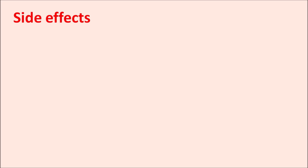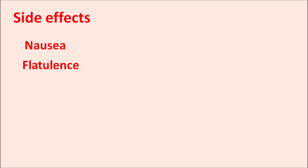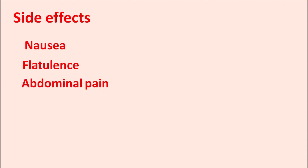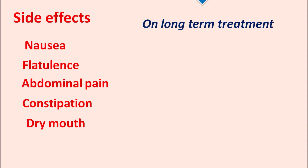The side effects of S-omeprazole are mainly related to the gastrointestinal system. It can produce nausea, flatulence, abdominal pain, constipation, and dry mouth. But on long-term treatment, this drug can produce diarrhea, particularly Clostridium difficile associated diarrhea.